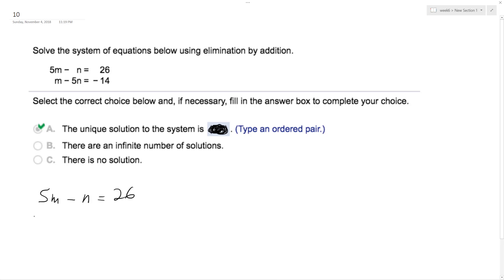So negative 5... I get negative 24m on the bottom because negative 25m plus m. The n's cancel out. And then 26 times 5 is 130.